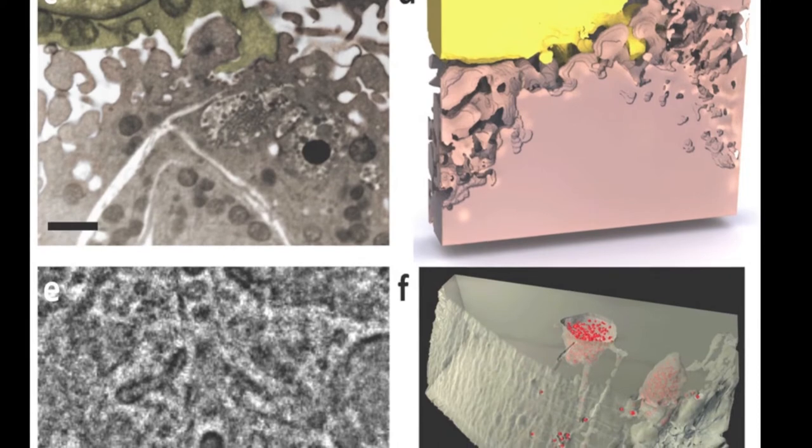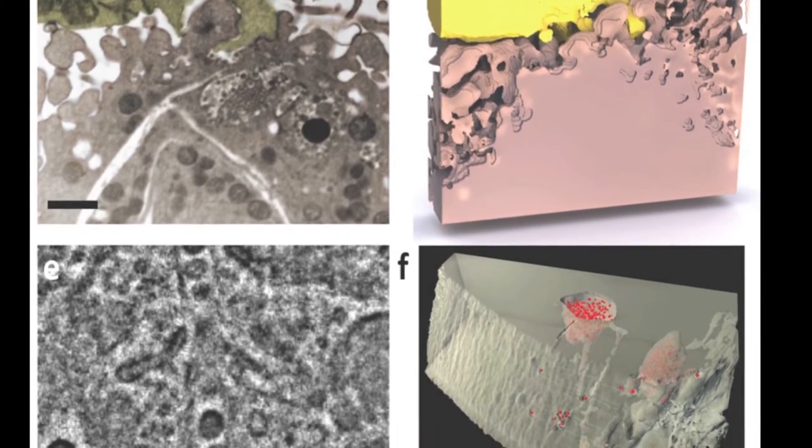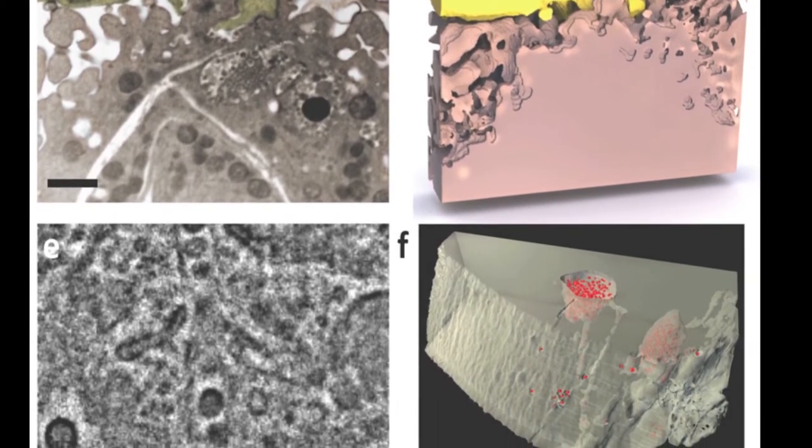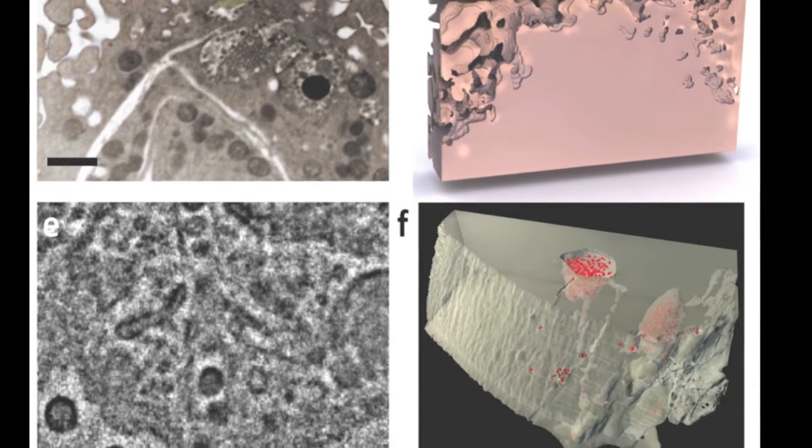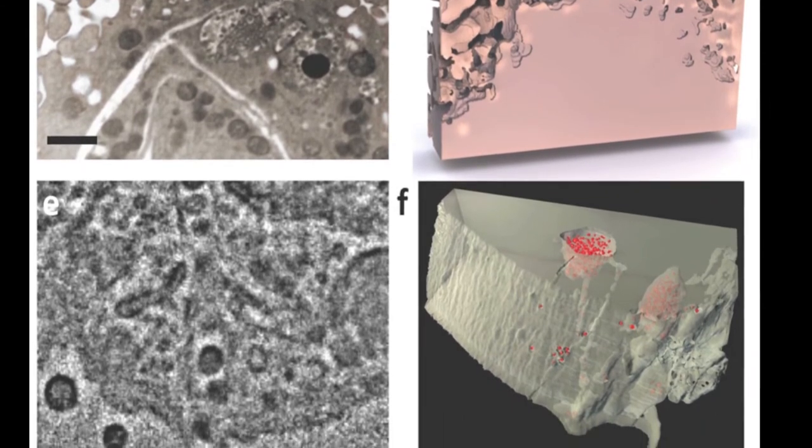FIB-SEM has the advantage of being able to image volumes many microns thick, and latest developments have allowed the imaging of very large volumes, above 10,000 cubic micrometers.